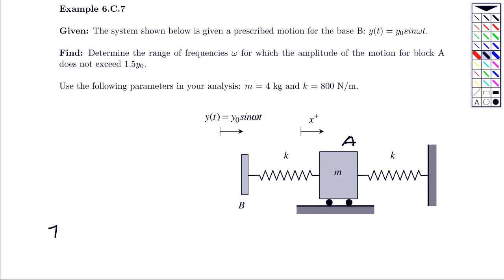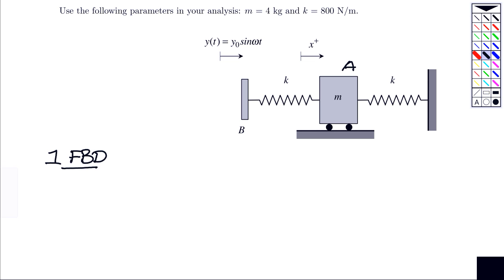So I'm going to draw a free body diagram of block A. X is defined here as the motion of block A. X is going to equal zero whenever those springs are unstretched. So what I have is the spring over here on the right side. It's going to have a magnitude of k times x. When x is plus, in other words that block is displaced to the right, that spring on the right is compressed.